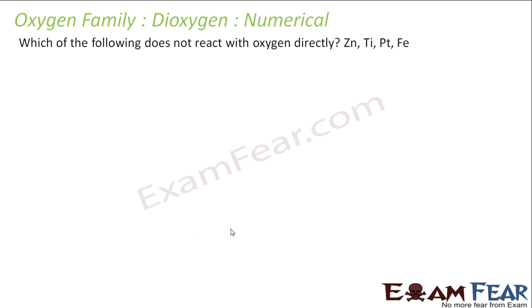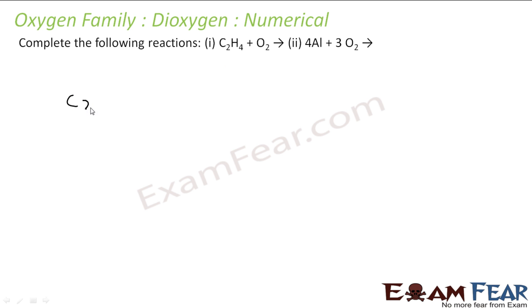Let's take some numerical. Which of the following does not react with oxygen directly? Zinc, yes it reacts. Titanium, yes. Platinum, no. Why? Platinum is a little noble metal. Iron, yes, obviously rusting of iron that we have seen. So platinum is the only one which does not react with oxygen directly. It is non-reactive metal, platinum and gold. If you complete this reaction: CH4 plus C2H4 burn in oxygen, it will give you carbon dioxide and water only. We have seen most of the hydrocarbons, they burn in oxygen to give carbon dioxide and water. We can balance this reaction. The next is aluminum plus oxygen, Al plus oxygen, it will actually give you Al2O3, and this is the balanced reaction.